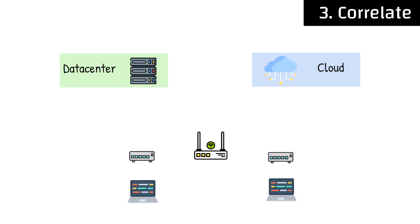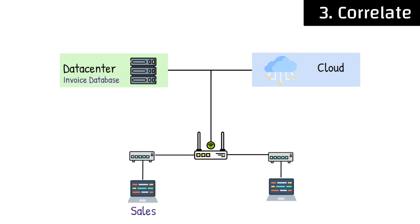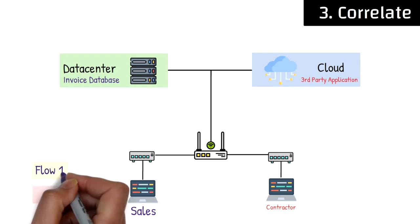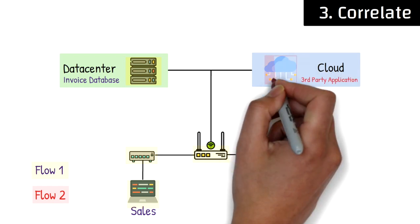With data coming in and relationships between devices established, the next function is to correlate the telemetry data between devices — meaning the relationship is understood between the various assets on your network and how they relate to the network at large. For example, a business-critical application used by third-party contractors might not have a relationship to a sales end user. However, their access to invoices may be critical for that business group. Correlating information between all systems involved in that specific flow is crucial — including endpoints, switches along the path, routers, firewalls, and servers that could all be problematic and require further investigation.